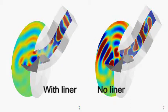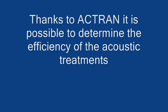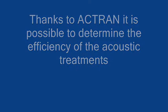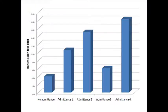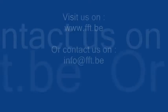ACTRAN allows the engineer to determine the efficiency and effectiveness of various acoustic treatments without building prototypes and testing each configuration. The bar chart illustrates that acoustic treatment configuration number 4 provided the most noise attenuation.